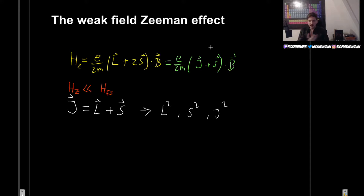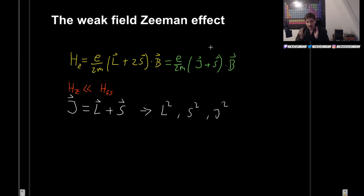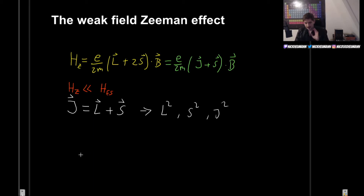S is going to be changing its value constantly, but we know that J is good. So what we could try to find is the average value of S — or rather, the projection of S in the direction of J. How can we find the projection of a vector in the direction of another? There is a formula you may have seen in linear algebra or mathematical methods.